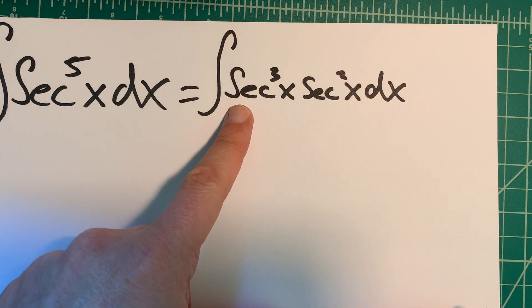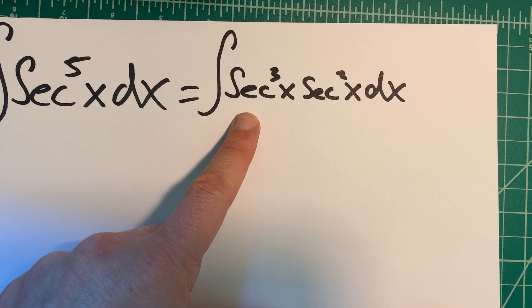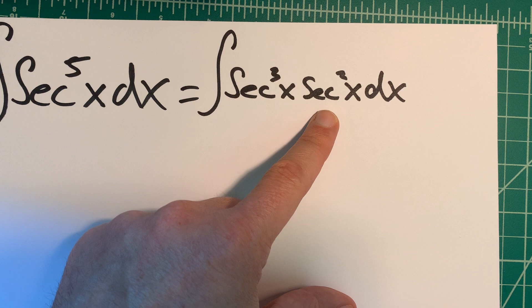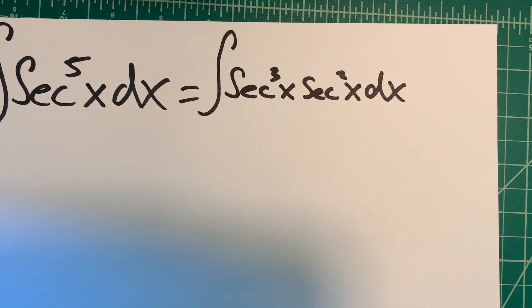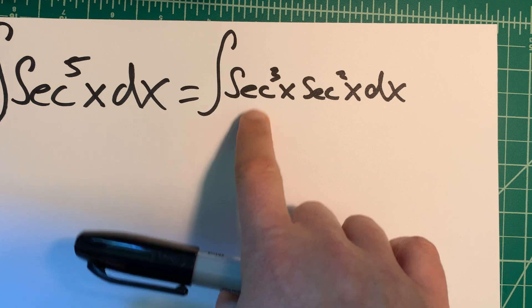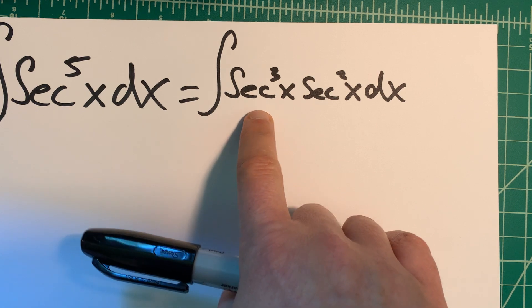And why would we do this? Well, if you saw my video with secant to the third, then you know how to solve that one. And we know a lot about secant squared, right? So that's pretty common. This one I just did a video about, so please check that out again if you haven't seen it.